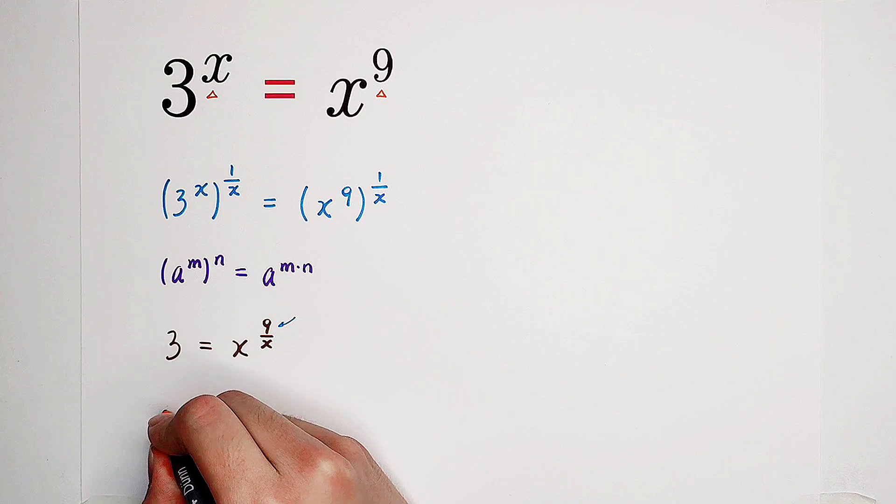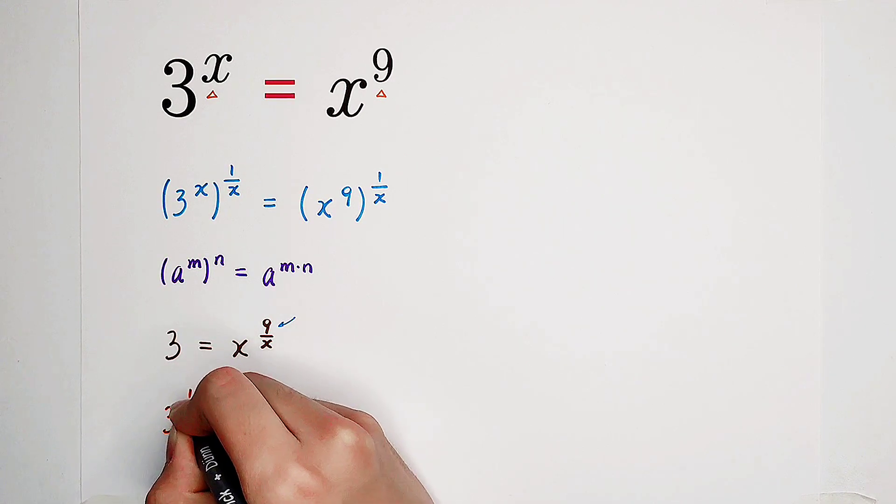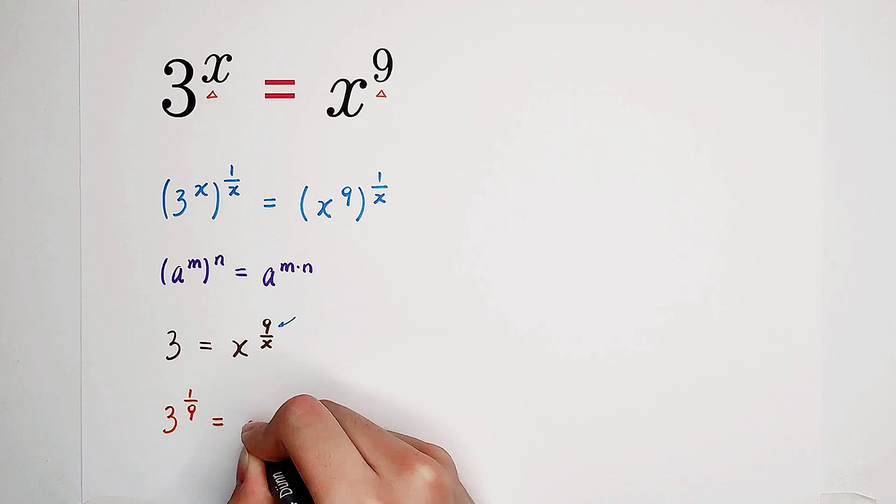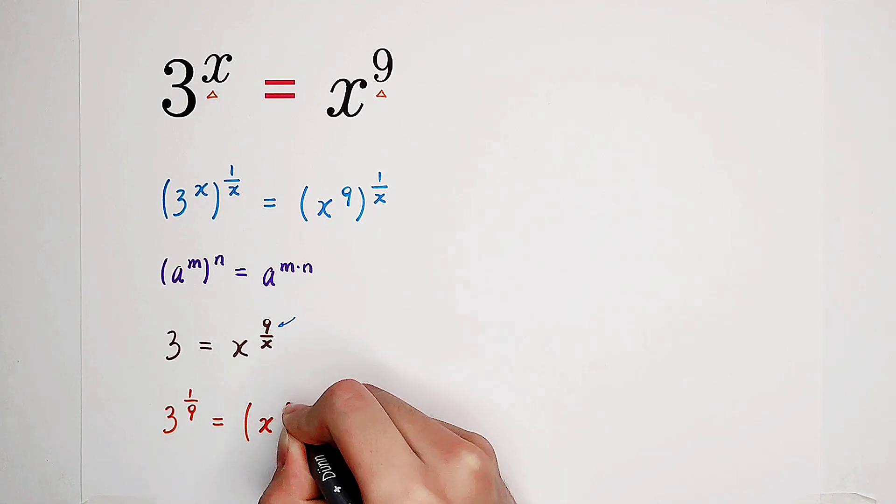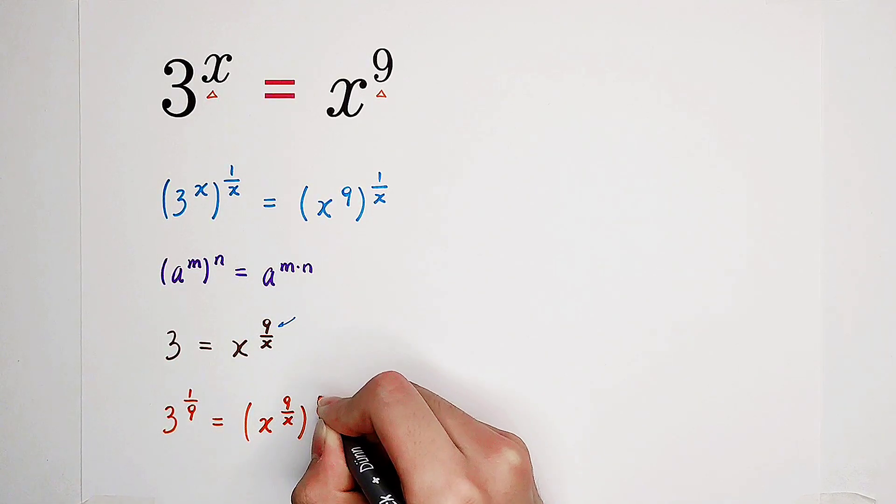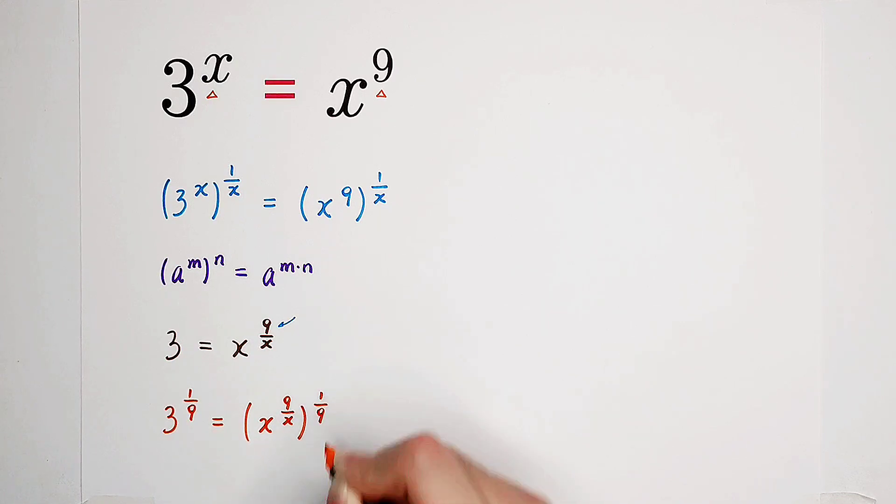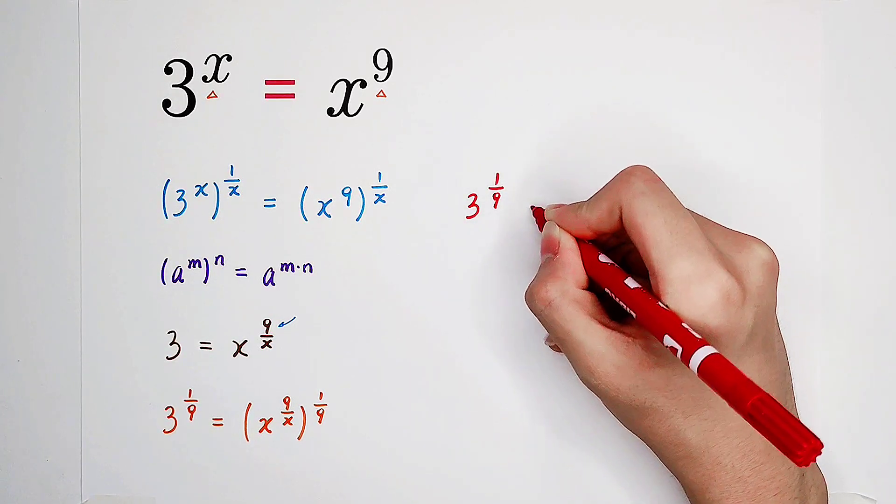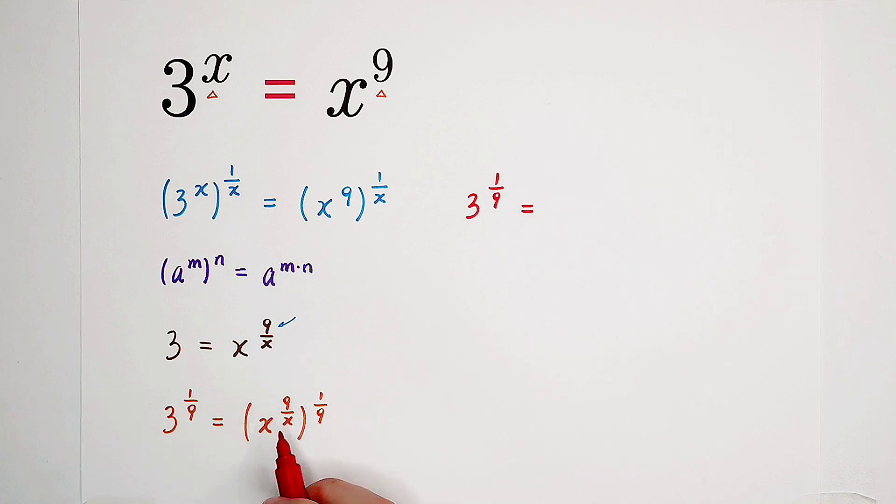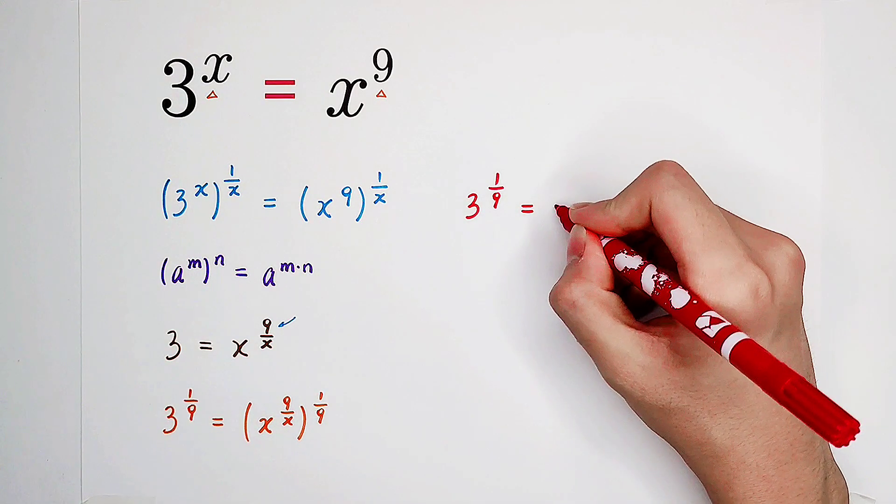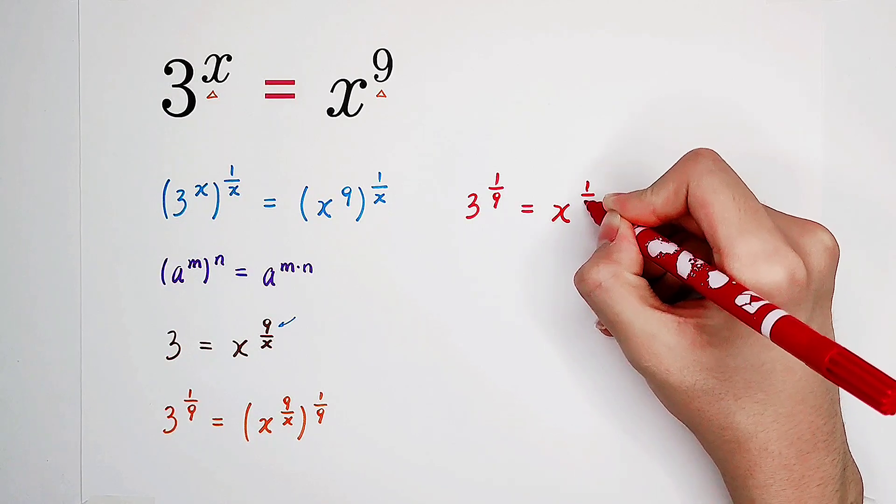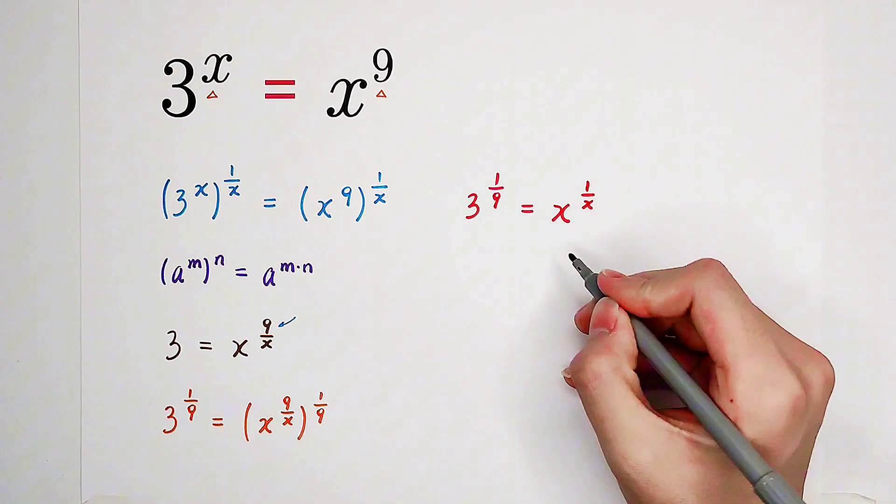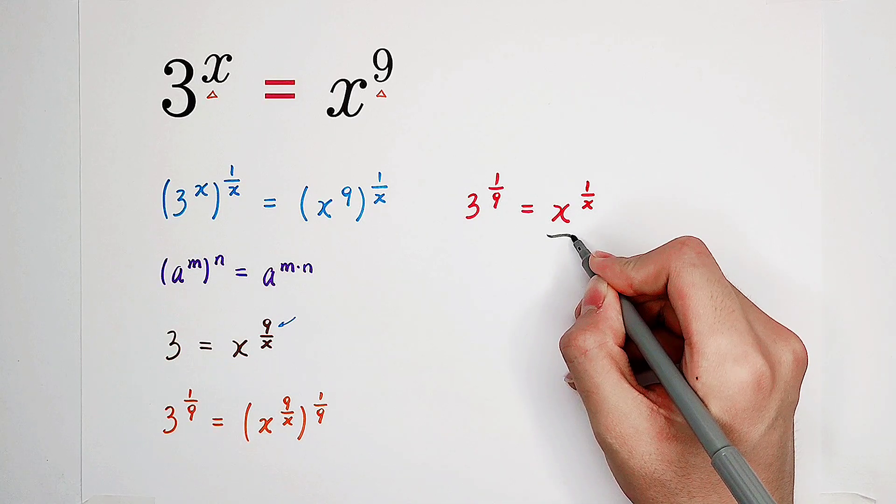So, it is 3 to the power of 1 over 9 equals x to the power of 9 over x to the power of 1 over 9. Then you can see, it is good. 3 to the power of 1 over 9 equals x to the power of, the exponent will be 9 over x times 1 over 9. It is 1 over x. Now you can see x to the power of 1 over x.